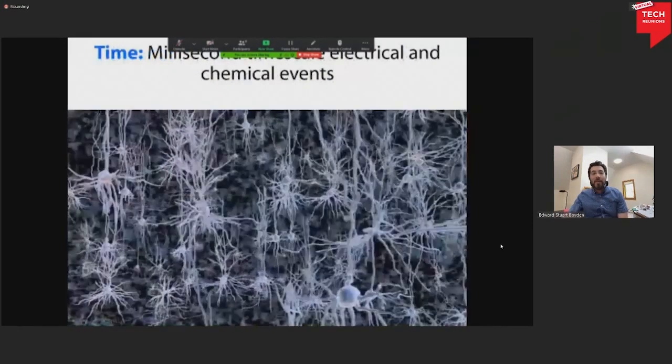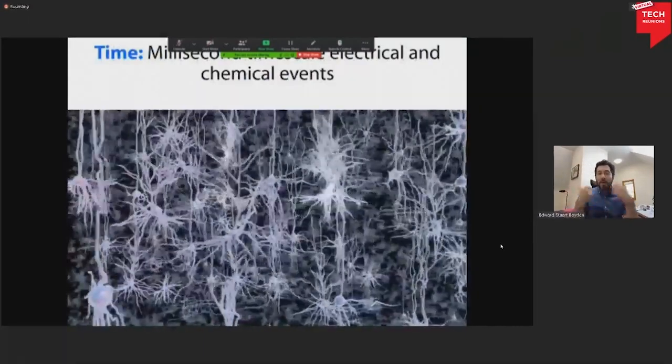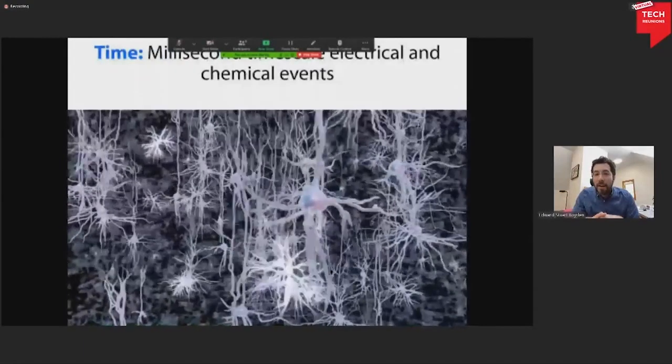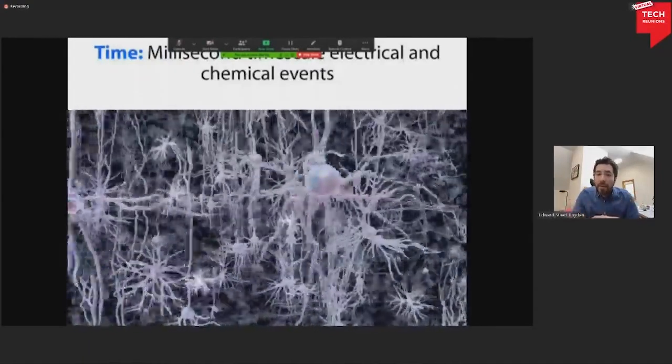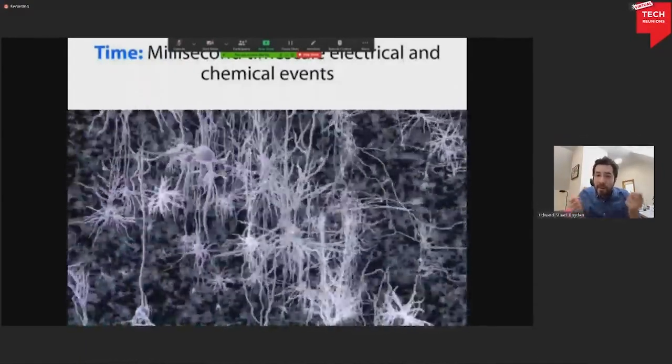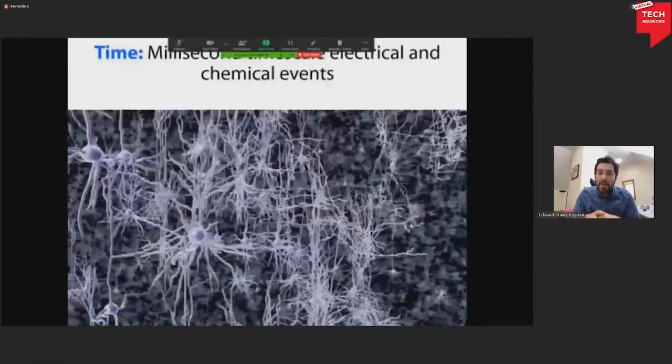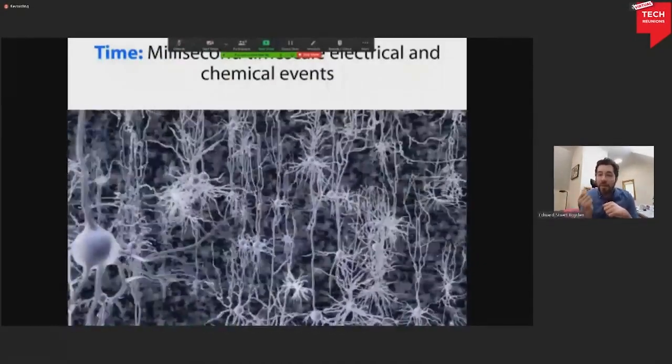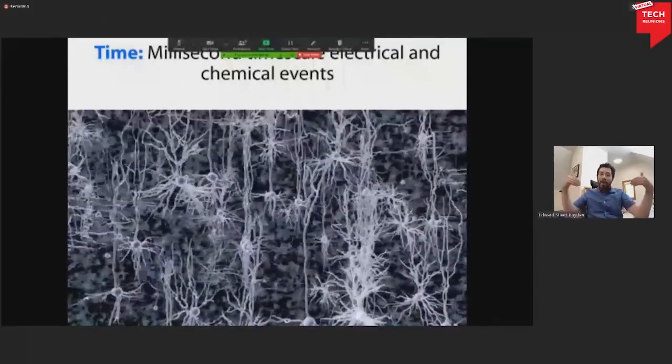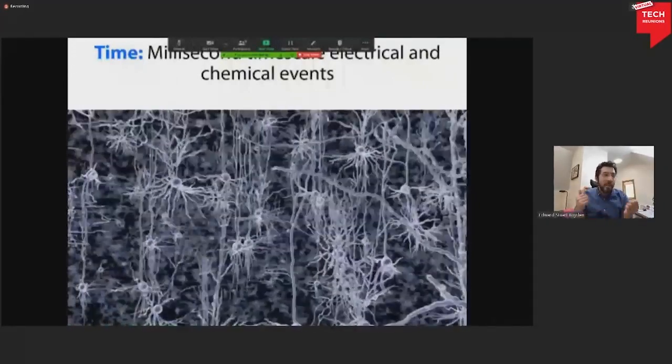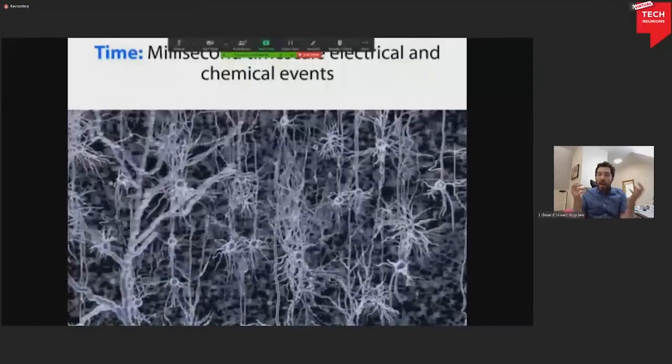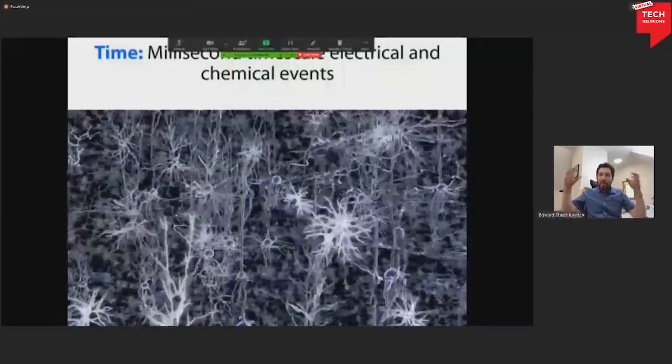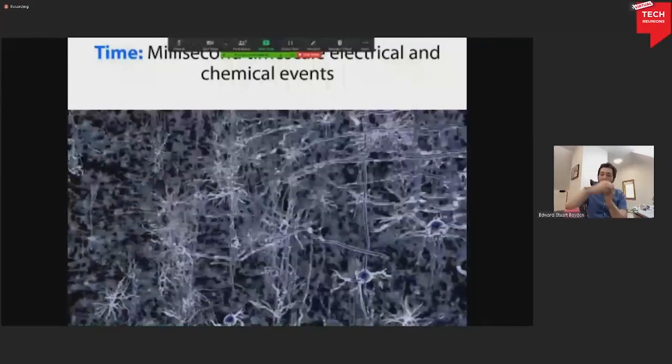And the other angle is time. If you care about learning or Alzheimer's disease or aging, these are processes that take years, even decades. But the sort of elementary building blocks of how the brain works are these millisecond timescale electrical events within neurons, and these millisecond timescale chemical exchanges between neurons. So how can we understand and repair such a complex thing from nano to centimeter, from millisecond to decade?